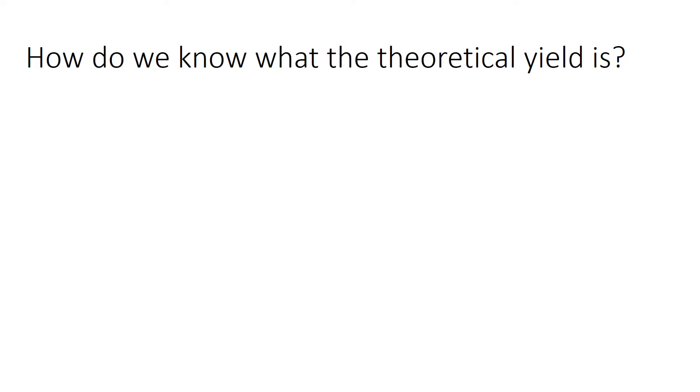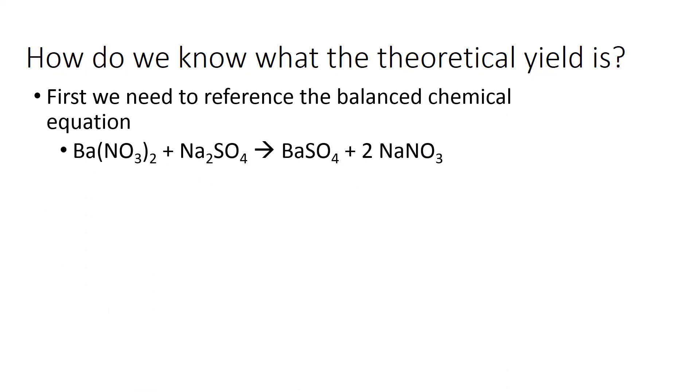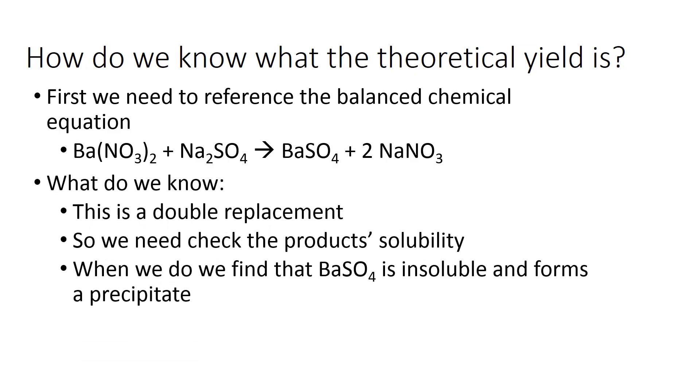The next thing on the data table is the theoretical yield. What is a theoretical yield? This is sort of a new concept. First, let's reference the balanced chemical equation that will be given to you on the lab: Ba(NO₃)₂ + Na₂SO₄ → BaSO₄ + 2NaNO₃. Something that should stick out here is that it is a double replacement reaction. That means we should check the products' solubility. I did that, remember the solubility table, and what we find here with barium sulfate is that it is insoluble and that will be our precipitate. That is what we're going to see when we mix these two solutions together. Sodium nitrate, sodium being a family one, is going to be soluble, so we don't have to worry about that.